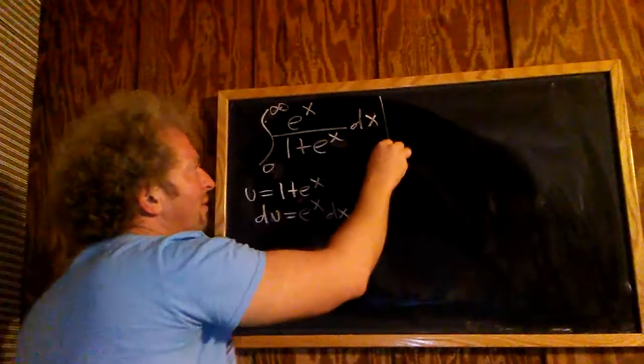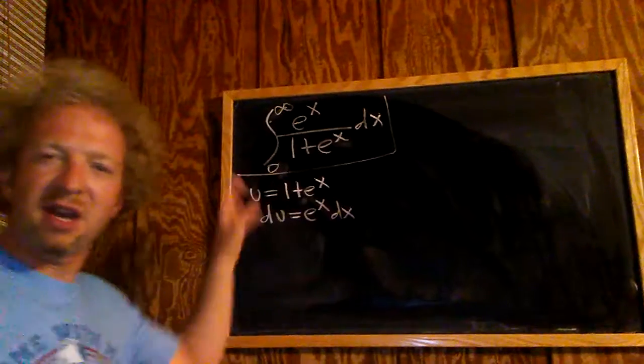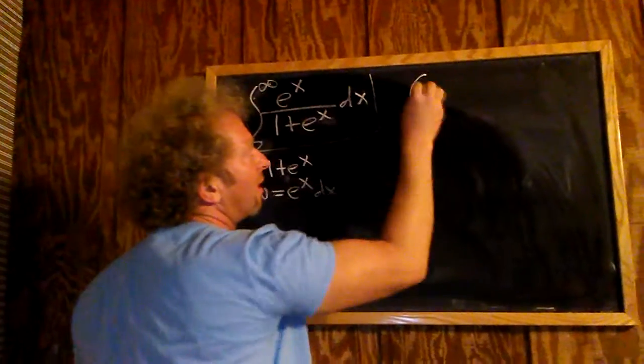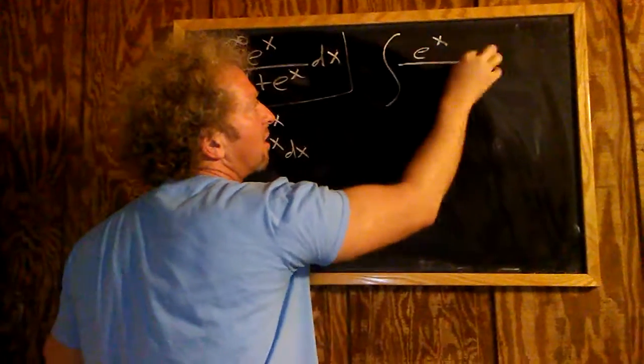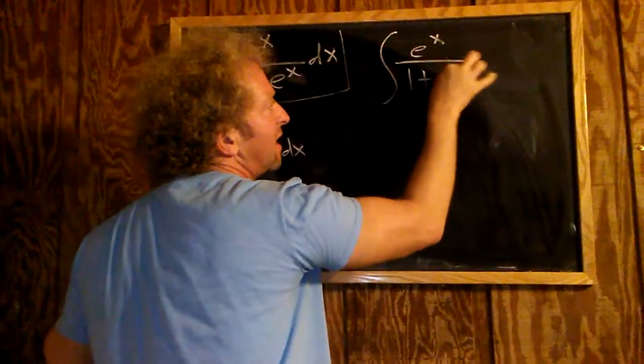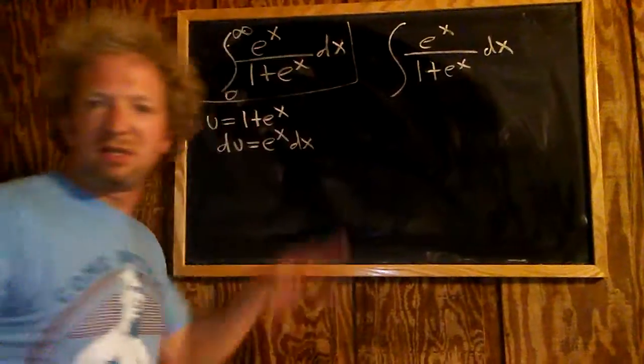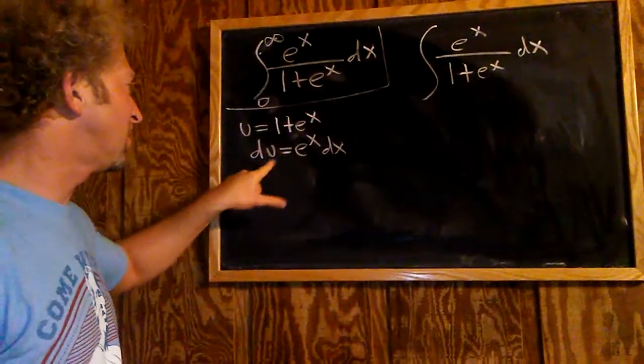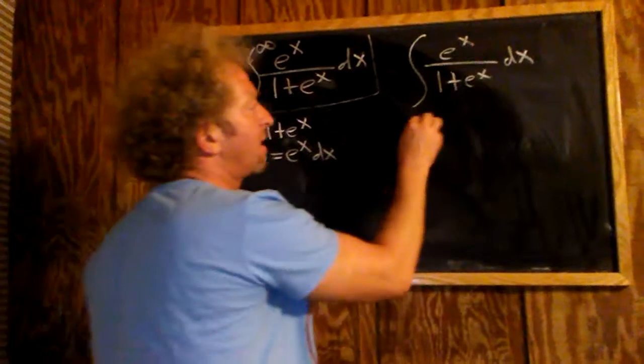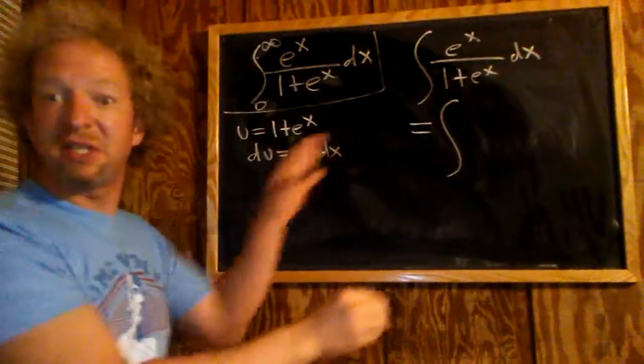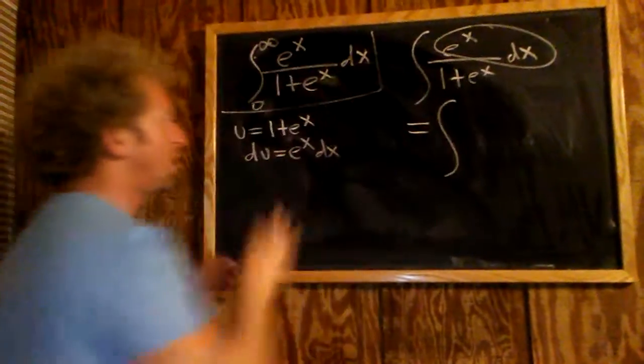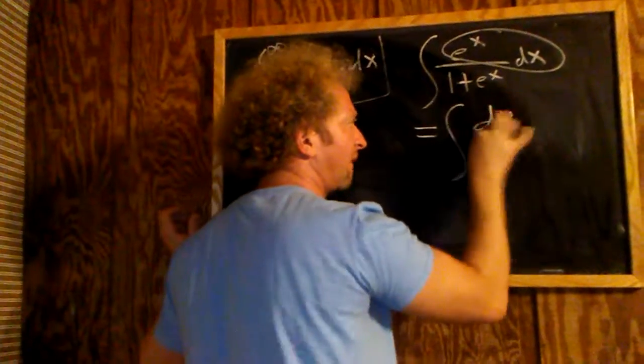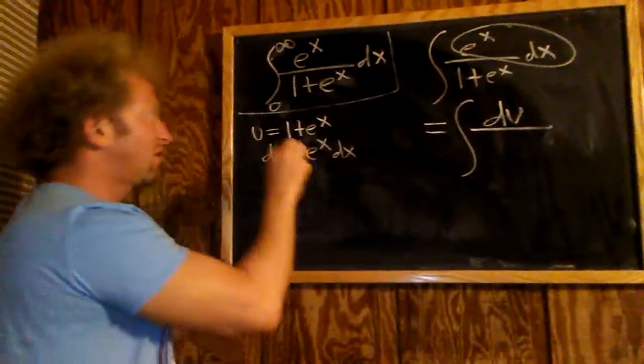And what I'll do is I'll actually work out the indefinite integral first, and at the end we'll deal with the limits. So we're actually going to work out e to the x over 1 plus e to the x dx. And at the end, we'll deal with these limits of integration. Alright, so if we let u be 1 plus e to the x, then du is e to the x dx. So this simply becomes, well this piece here is precisely du, so du. So this is du, and the bottom is just u.